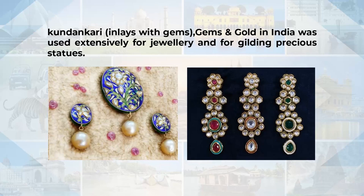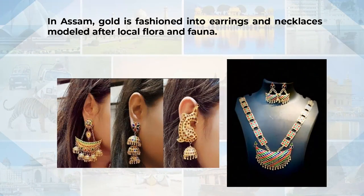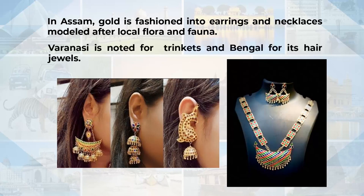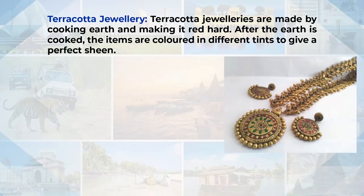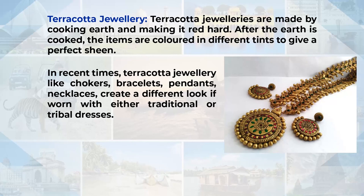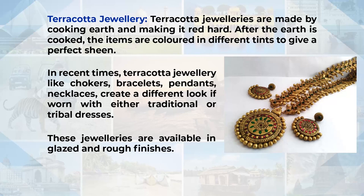Gems and gold in India were used extensively for jewellery and for gilding precious statues. In Assam, gold is fashioned into earrings and necklaces modelled on local flora and fauna. Varanasi is popular for trinkets and Bengal for hair jewels. Terracotta jewellery — made from cooked earth made red and hard, then coloured in different tints — is also very popular. Items like chokers, bracelets, pendants and necklaces create a different look when worn with traditional or tribal dresses, available in glazed and rough finishes. Ladakhi jewellery of amber, coral and turquoise is also popular.